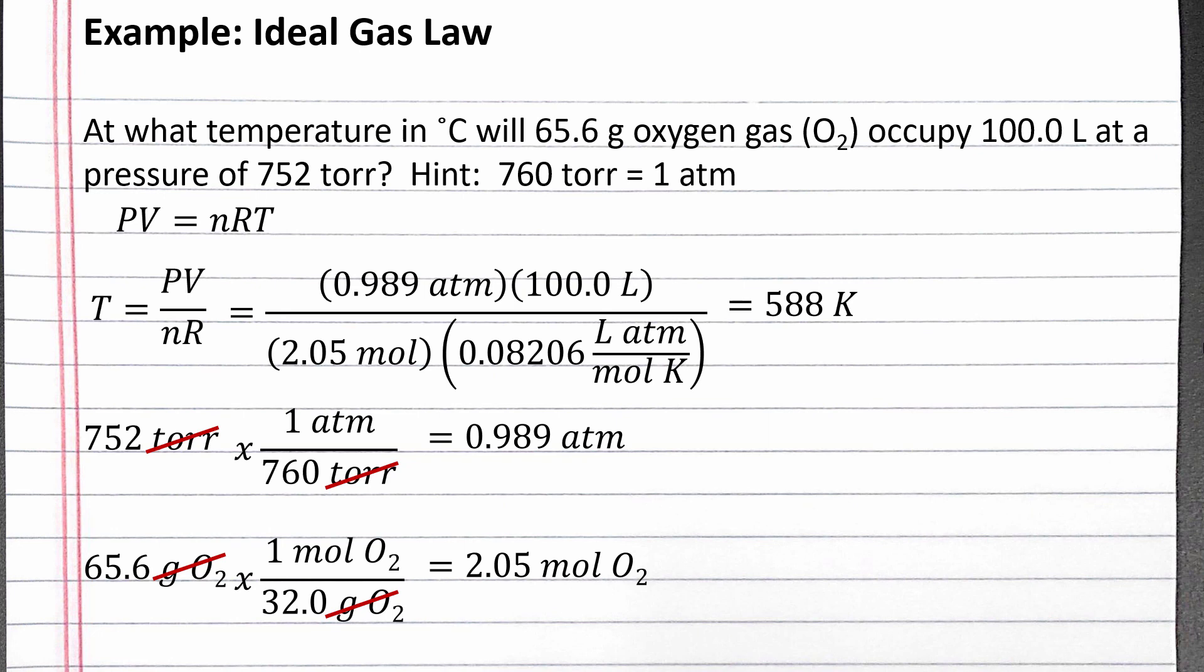To convert this to degrees Celsius, we subtract 273 to get 315 degrees Celsius.